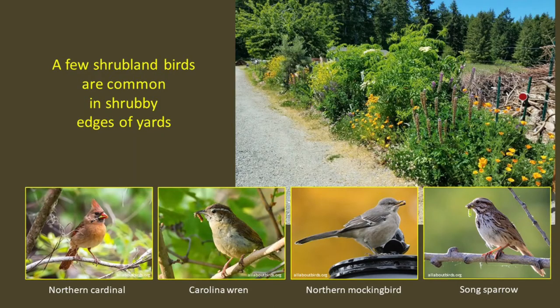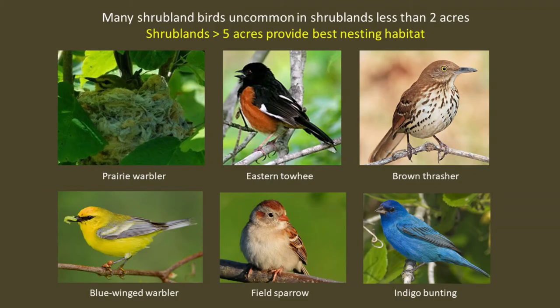Although there are a few shrubland birds — including cardinals, Carolina wrens, northern mockingbirds, and song sparrows — that are commonly observed around yards where there are shrubby edges, many shrubland birds are uncommon in shrublands less than about two acres in size. For most species, shrublands greater than five acres likely provide them with the best breeding habitat.